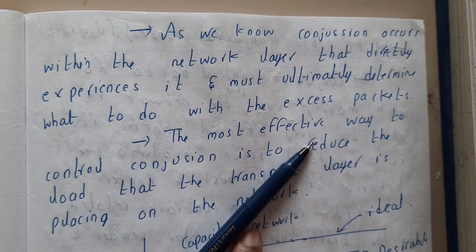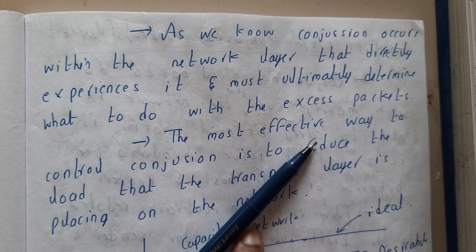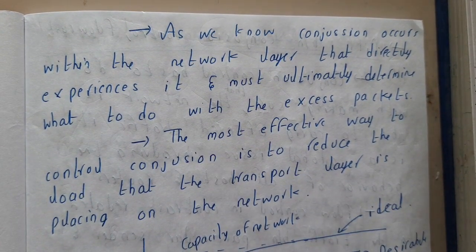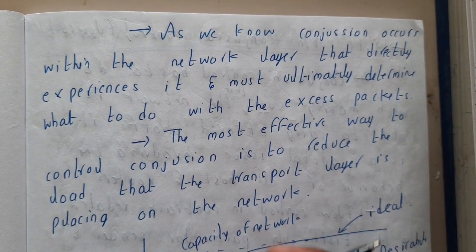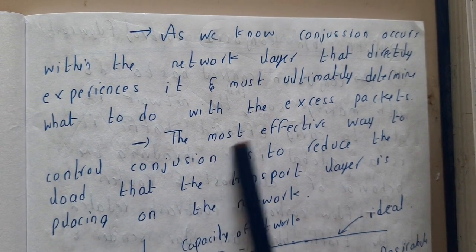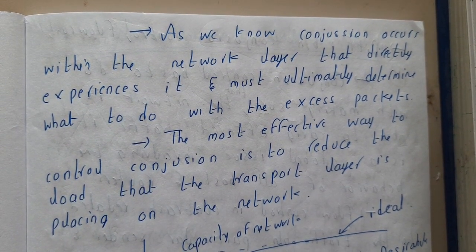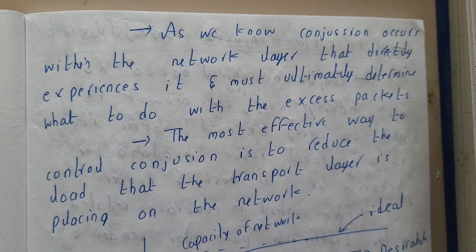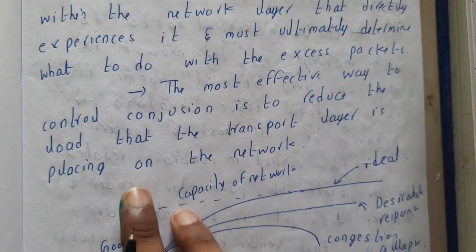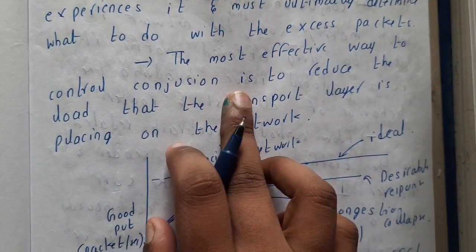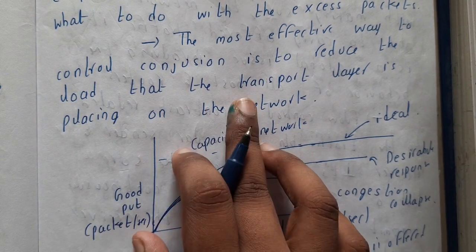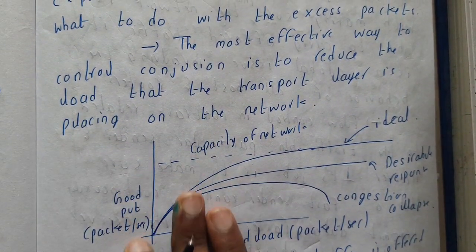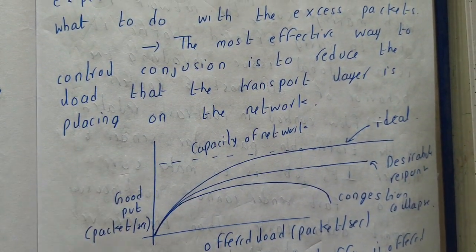If there is heavy traffic on a road, you take an alternate path rather than wasting your time. If there is no alternate path, you are stuck along with everyone else. The most effective way to control congestion is to reduce the load that the transport layer is placing on the network.